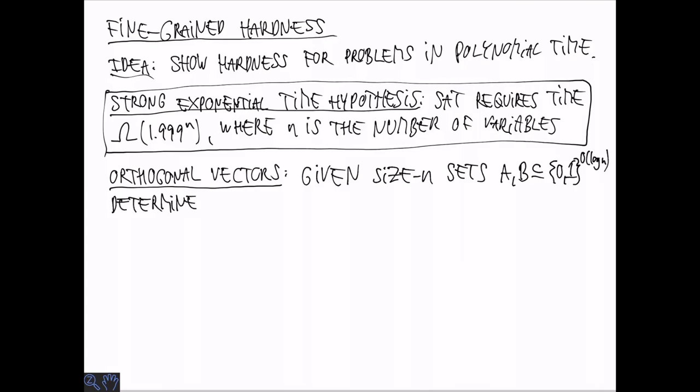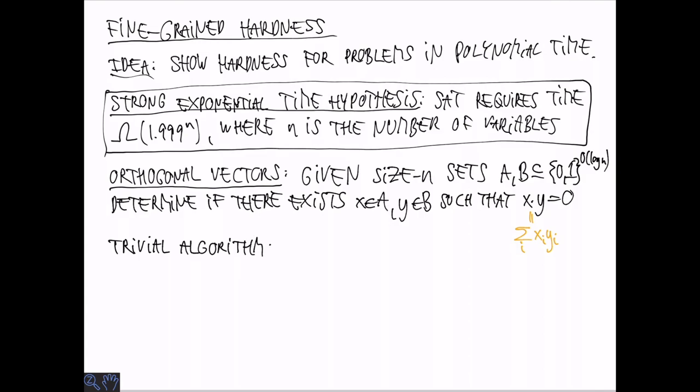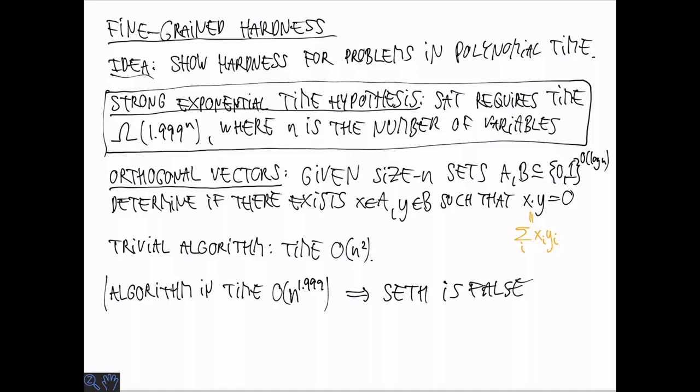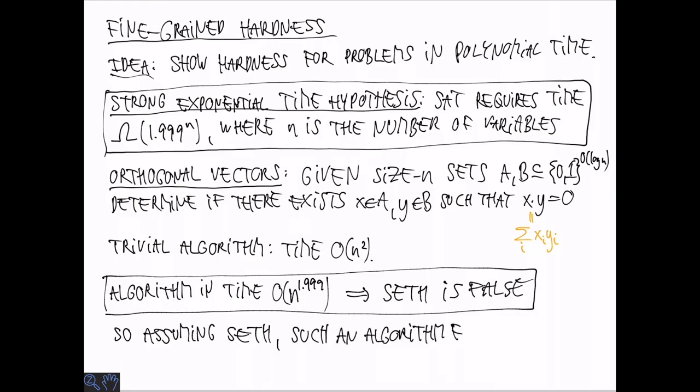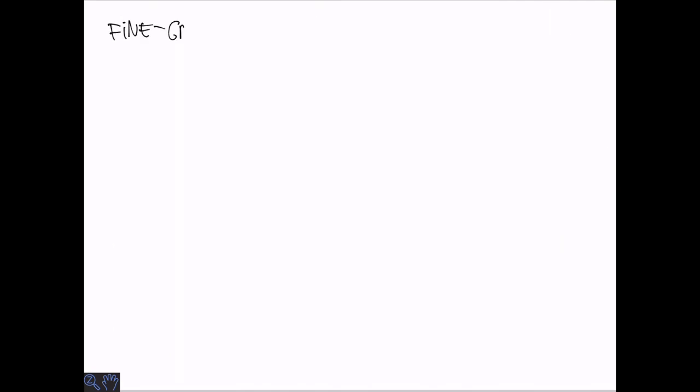A related problem is the orthogonal vectors problem. We are given two sets of size n of vectors of log n dimensions, binary vectors, and we need to determine if there exists a vector pair x in A and y in B that have a dot product of 0, that is, they don't share a 1 in any of the log n dimensions. There is a trivial quadratic time algorithm that just tries all pairs. It is known that an algorithm that is faster than that, that runs in time O of n to the 1.999, would imply that the Strong Exponential Time Hypothesis is false. In other words, assuming the Strong Exponential Time Hypothesis, it isn't possible to achieve such an algorithm for the orthogonal vectors problem.